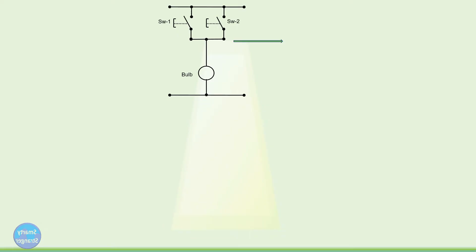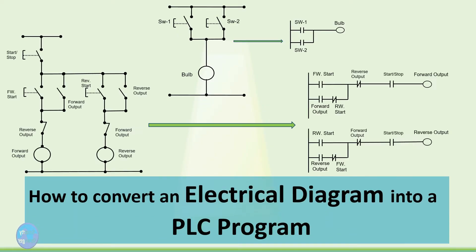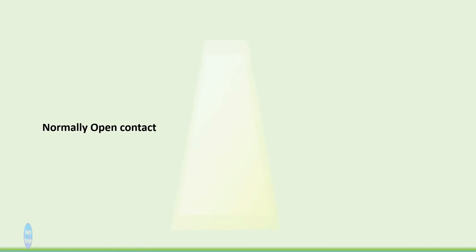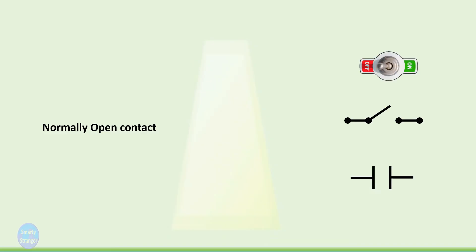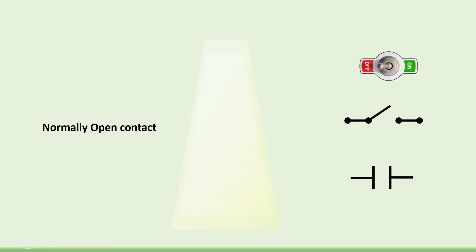Today we will learn how we can convert any electrical diagram into a PLC program. You should know the basic symbols used for programming. The first is the normally open contact. Normally open contact is like an open switch. When its corresponding physical input is energized or high, the normally open contact becomes a closed contact. When the input is de-energized or low, it becomes open again.